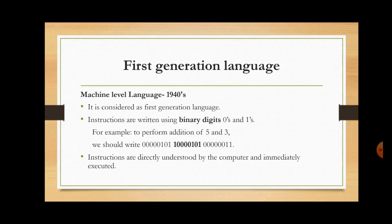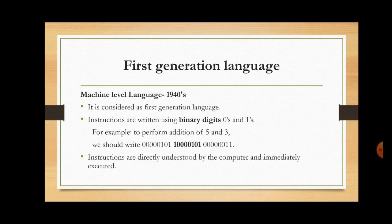Since all the instructions are written using binary digits, they are directly understood by the computer and immediately executed. You might ask whether the computer really understands zeros and ones. Strictly speaking, the computer does not even understand zeros and ones. The hardware components of the computer can only understand electrical pulses. It is a convention that the presence of high voltage is assumed to be bit 1 and low voltage to be bit 0. Hence, we say that machine language is the only language understood by the computer.